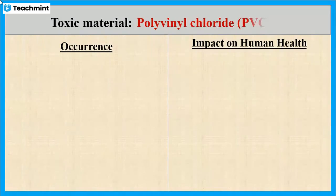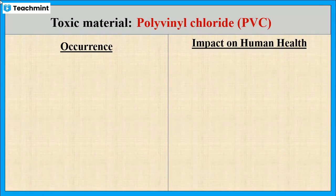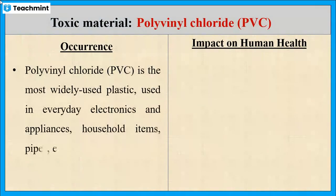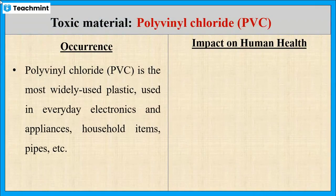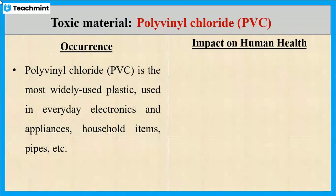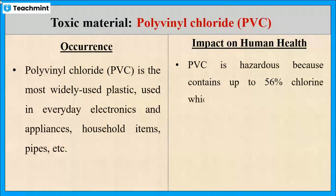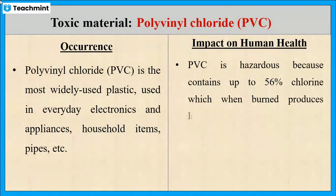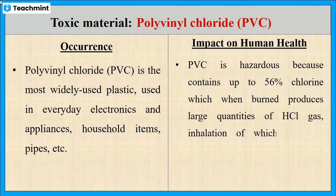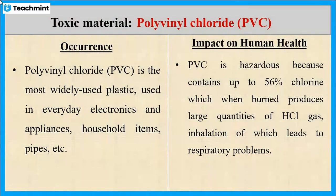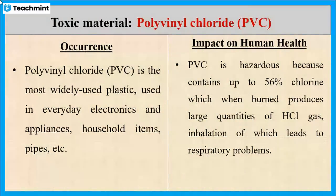The next one is PVC, polyvinyl chloride. It is most widely used in electronic appliances for the purpose of insulation. However, it is hazardous as it contains about 56% chlorine content. By burning, it will produce HCl gas, inhalation of which leads to respiratory problems.